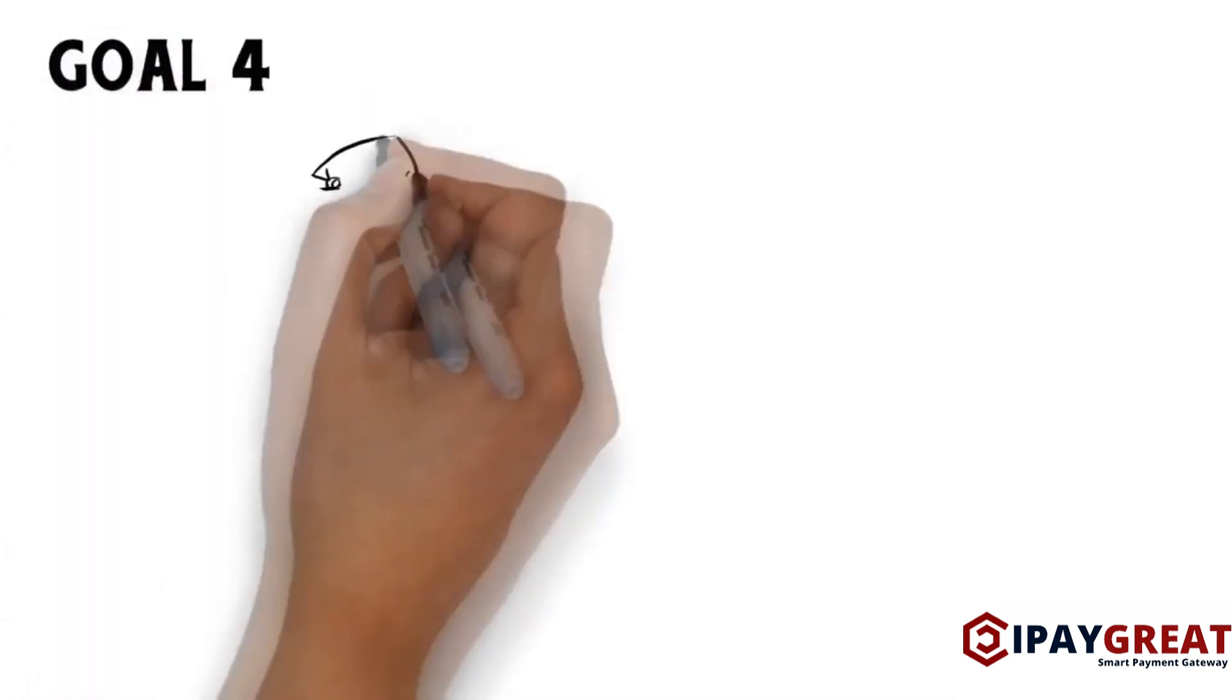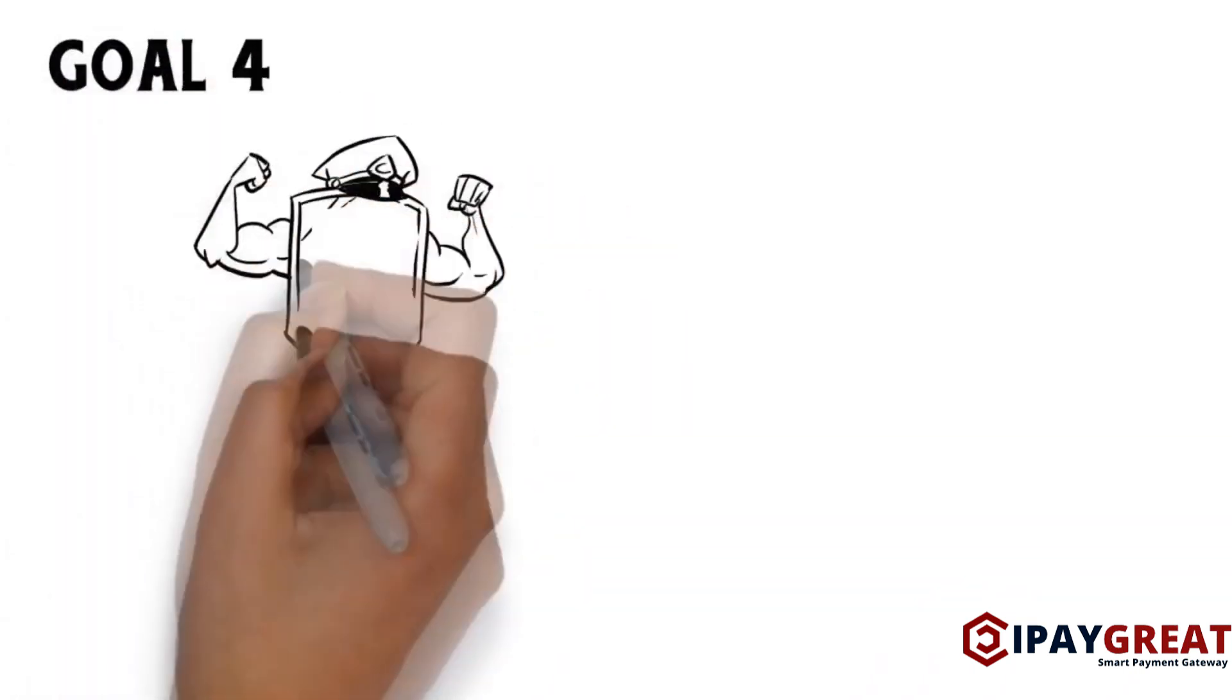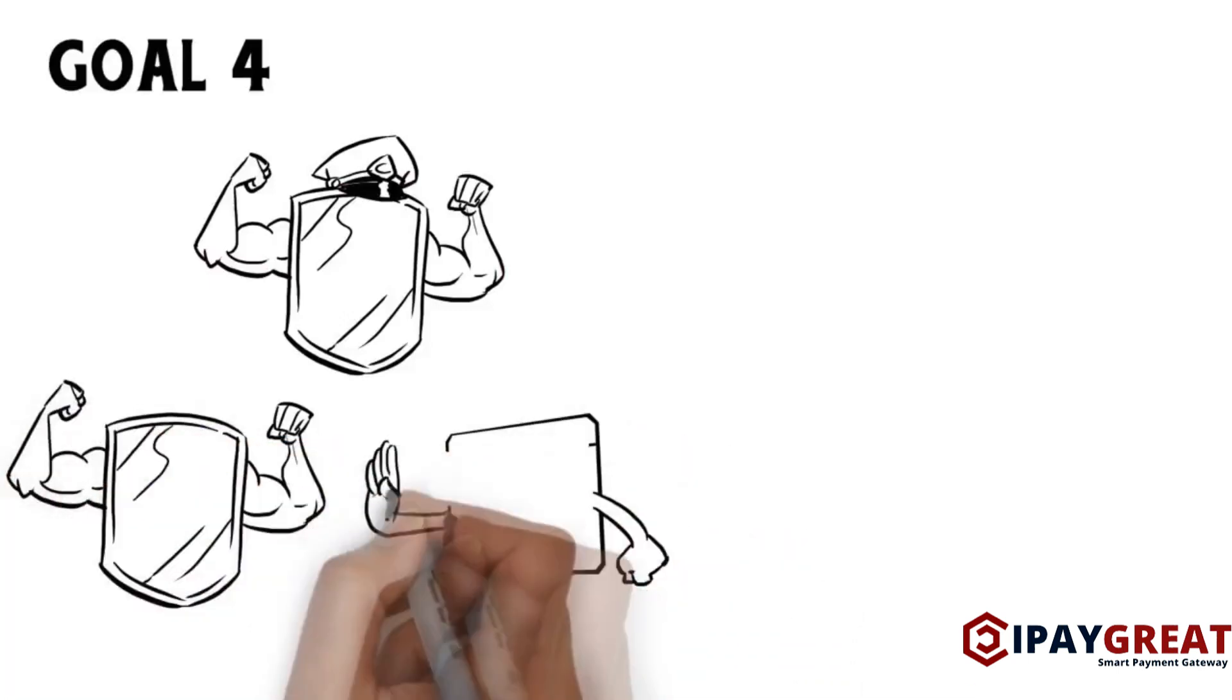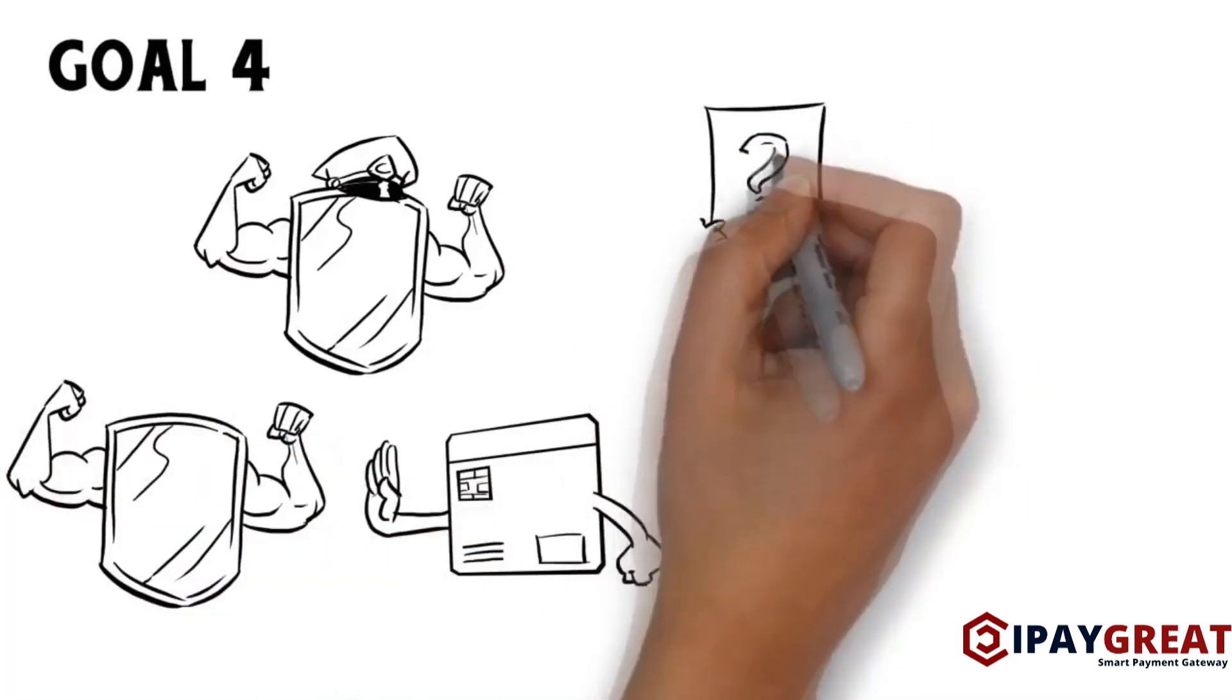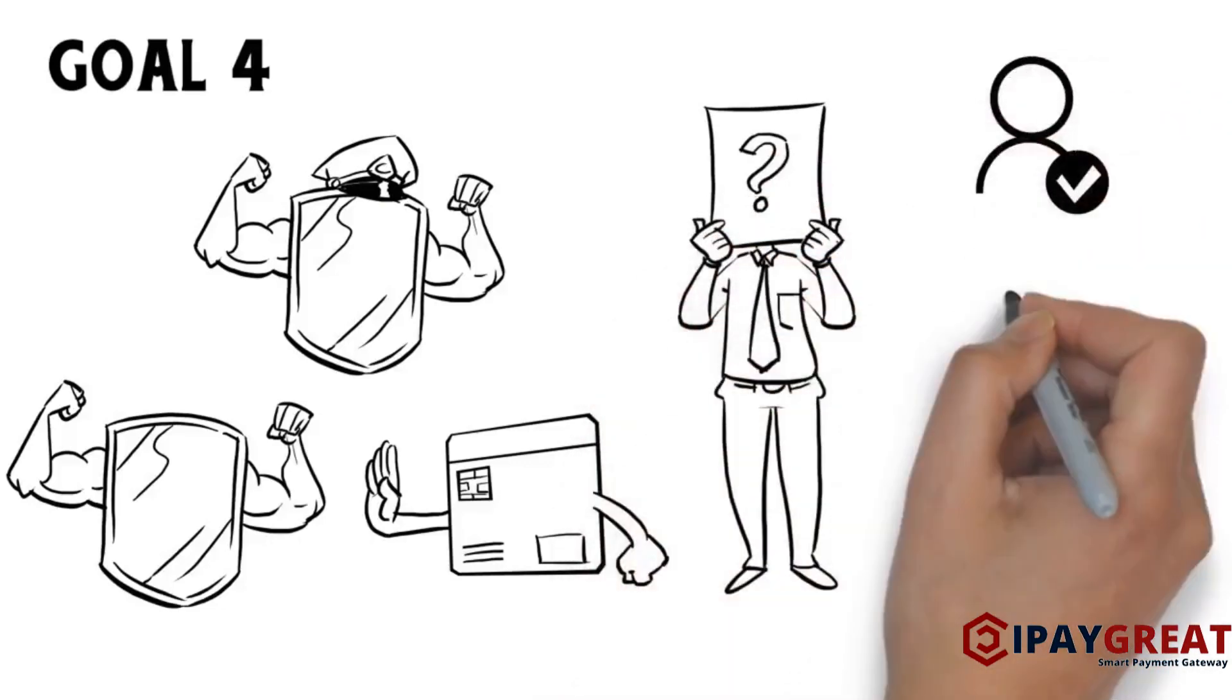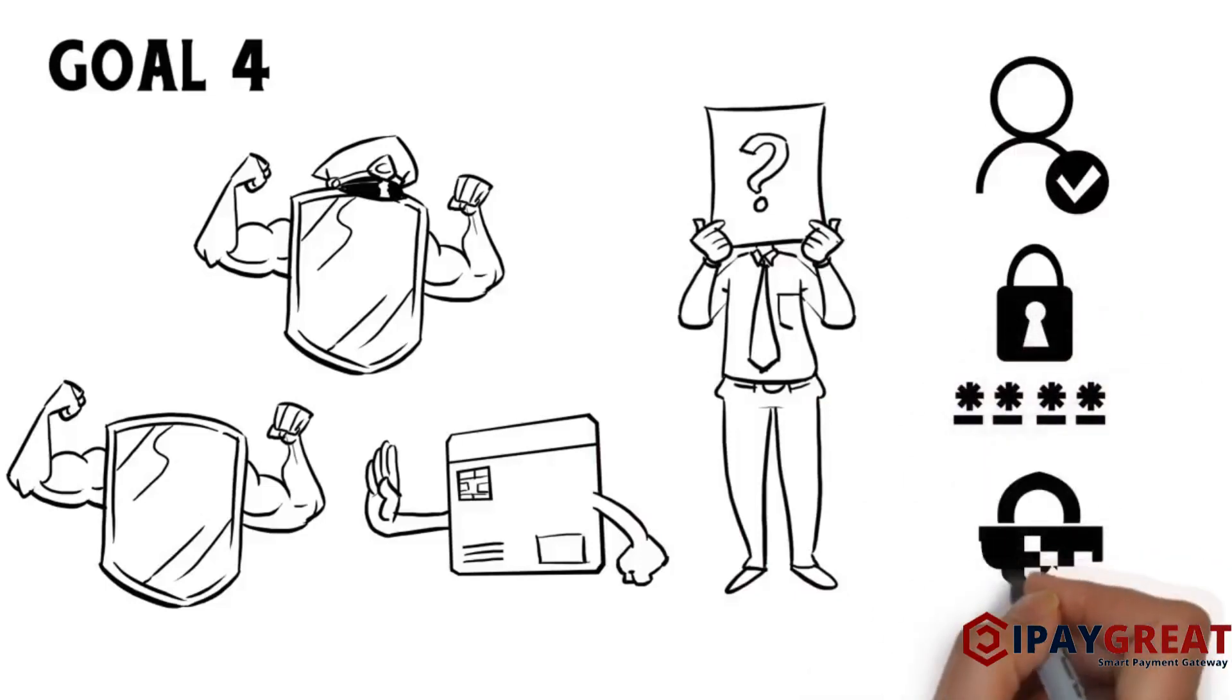Goal 4: Implement strong access control measures. Restrict logical and physical access to cardholder data on a need-to-know basis. Identify and authenticate access to all systems by using strong authentication practices, passwords, and encryption.